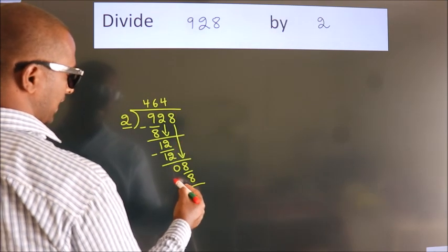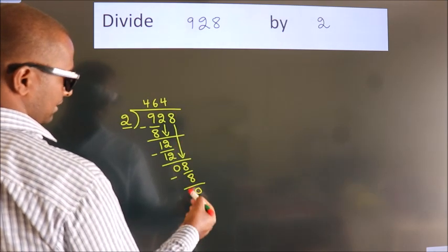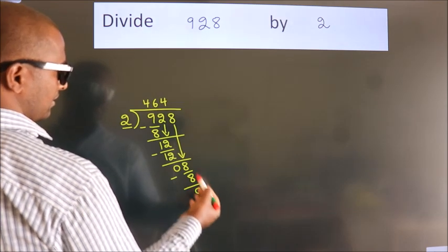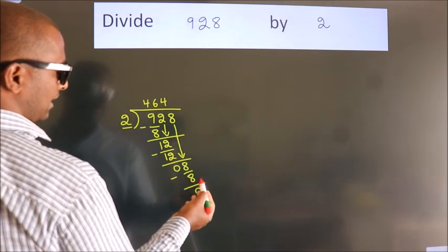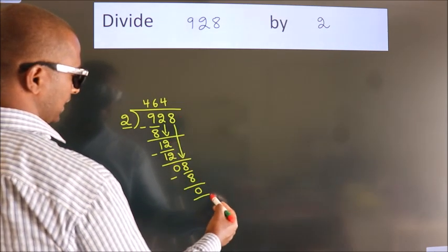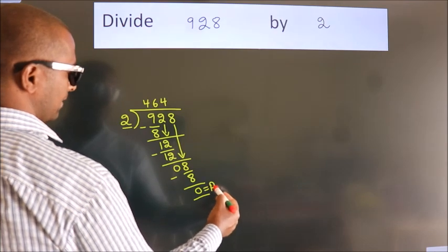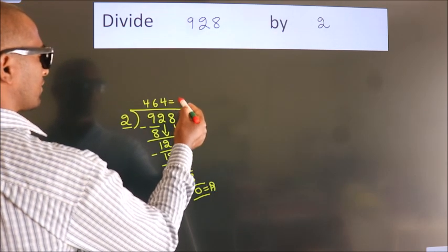Now, we subtract. We get 0. After this, no more numbers to bring it down. So, we stop here. This is our remainder. This is our quotient.